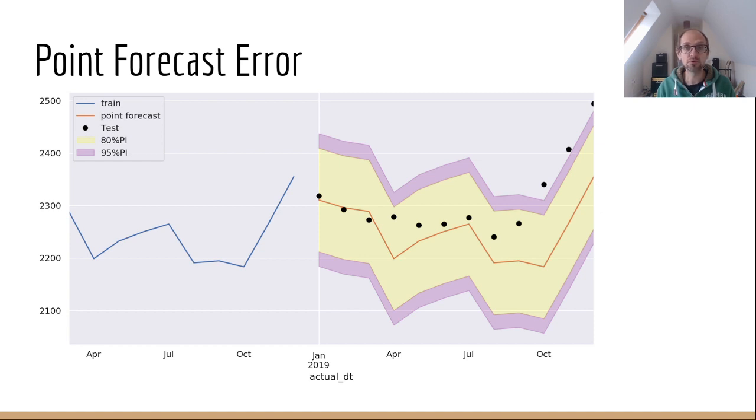So let's start with point forecast error. We've got a zoomed in time series here. Our blue line again is our training data, that's our ground truth data that we're training our model with. And then we've got our red line which is our point forecast, that's synthetic data, that's something our model has produced for us.